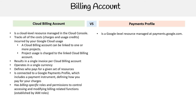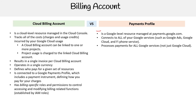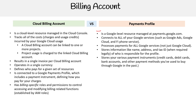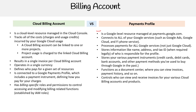On the Payments Profile side: it is a Google-level resource managed at payments.google.com. It connects to all of your Google services such as Google Ads, Google Cloud, and Fi phone service. It processes payments for all Google services, not just Google Cloud. It stores information like names, address, and tax ID when required legally, or who is responsible for the profile. It also stores your various payment instruments — credit cards, debit cards, bank accounts, and other payment methods you've used to buy through Google in the past. It functions as a document center where you can view invoices, payment history, and so on, and controls who can view and receive invoices of various Cloud Billing Accounts and products.